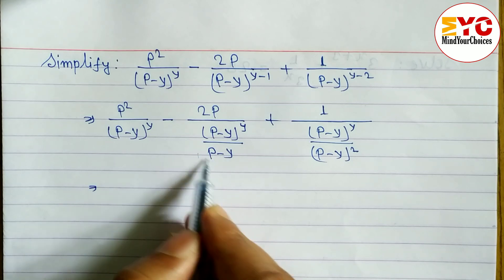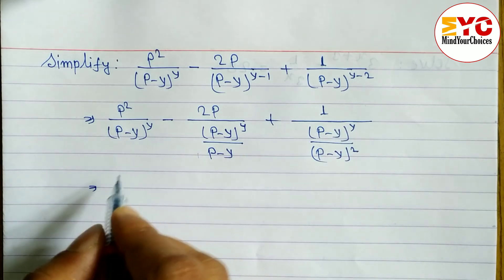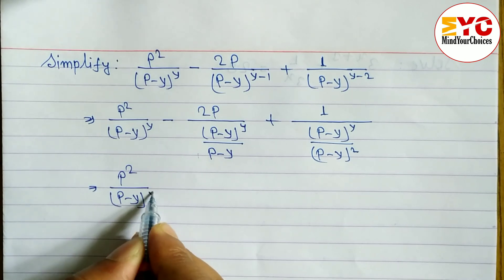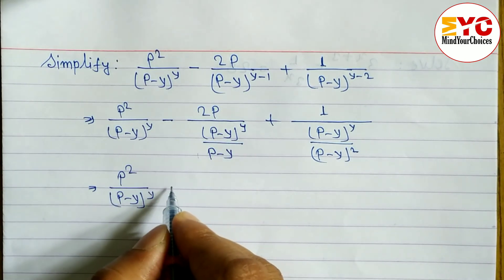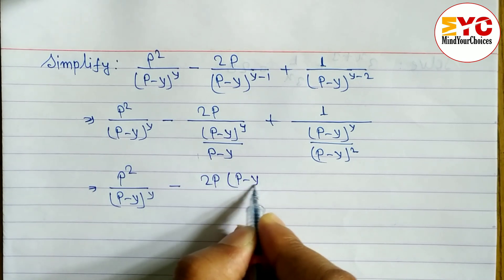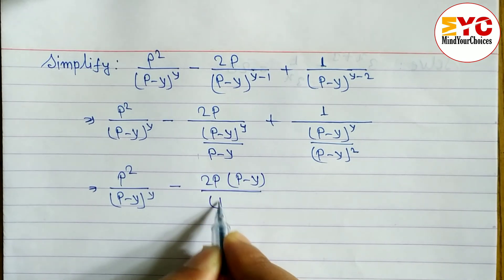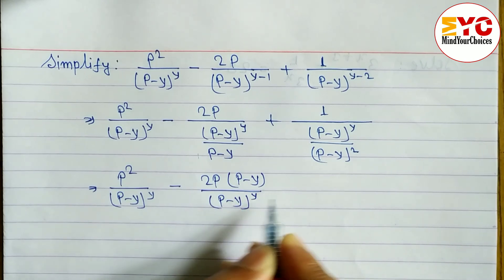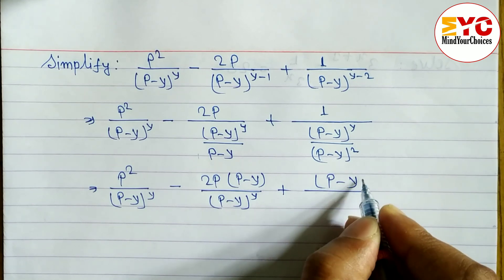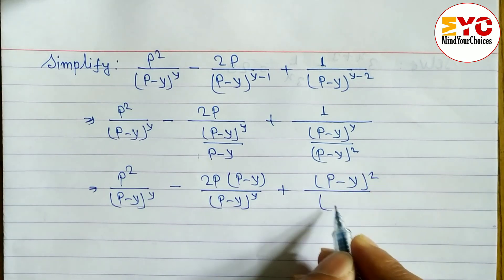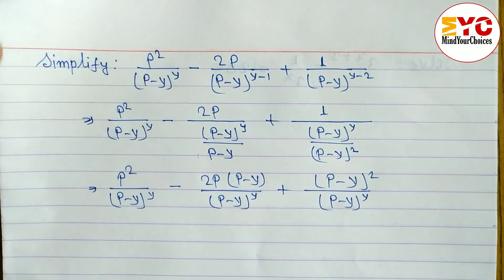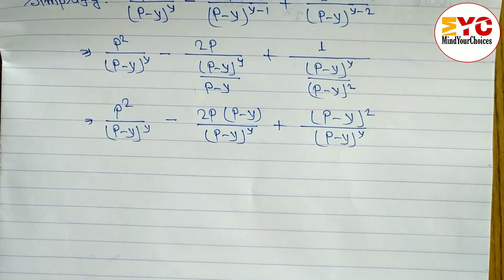After that, this term and this term go to the numerator. So we write p² / (p−y)^y, and 2p·(p−y) goes to the numerator divided by (p−y)^y, plus (p−y)² over (p−y)^y. Then we take the LCM.